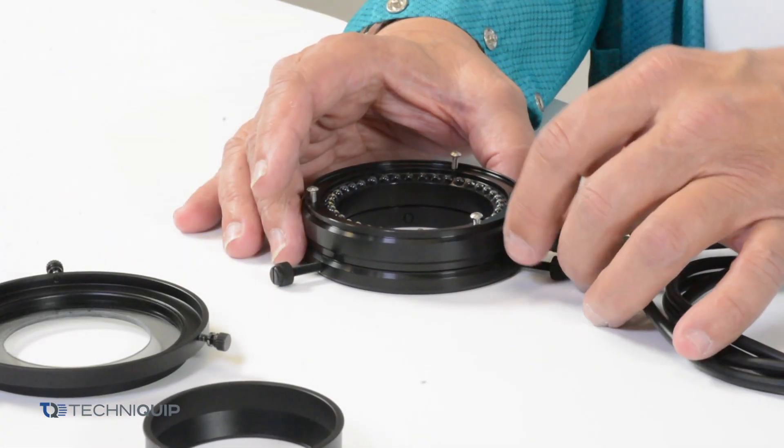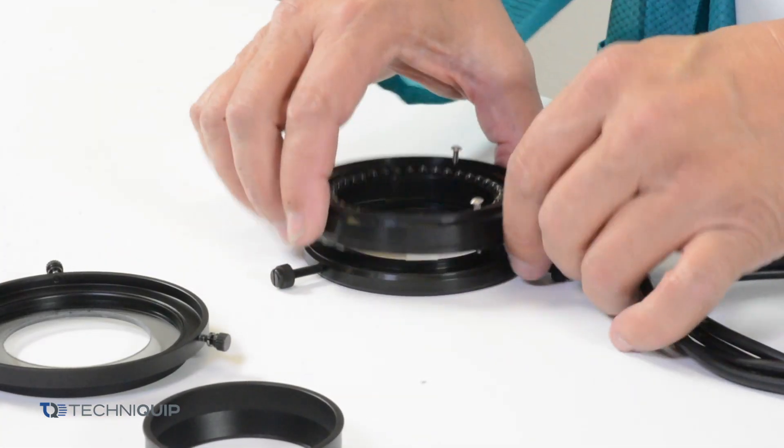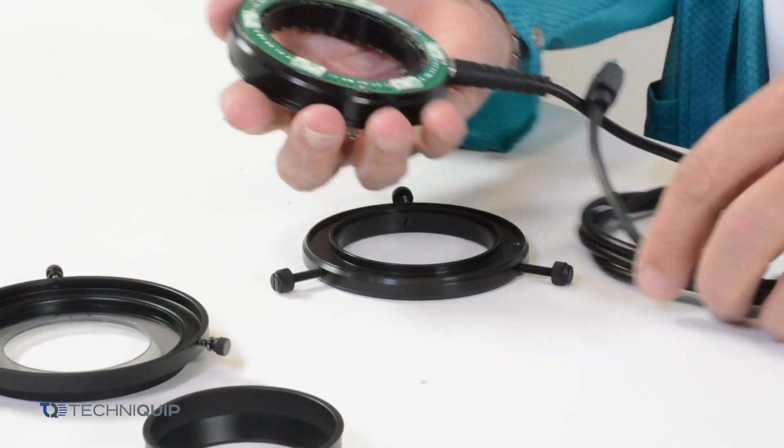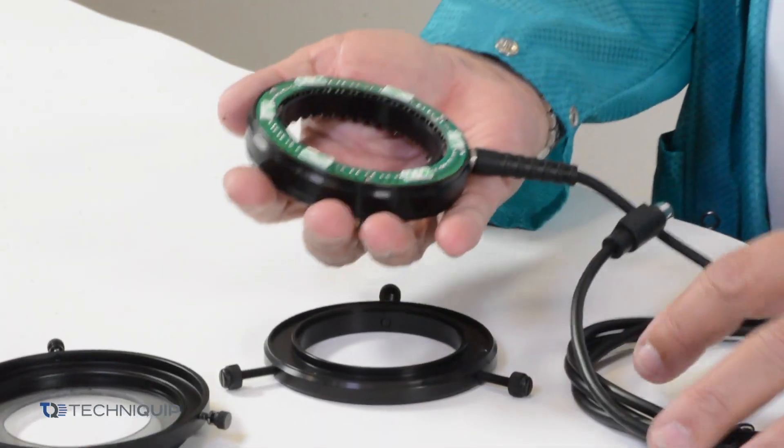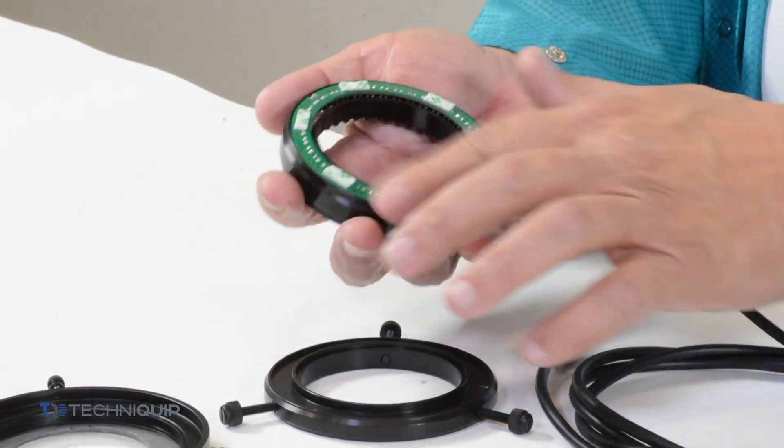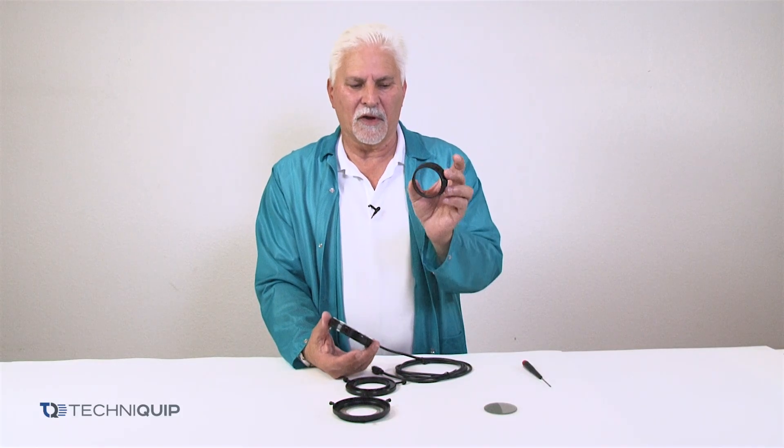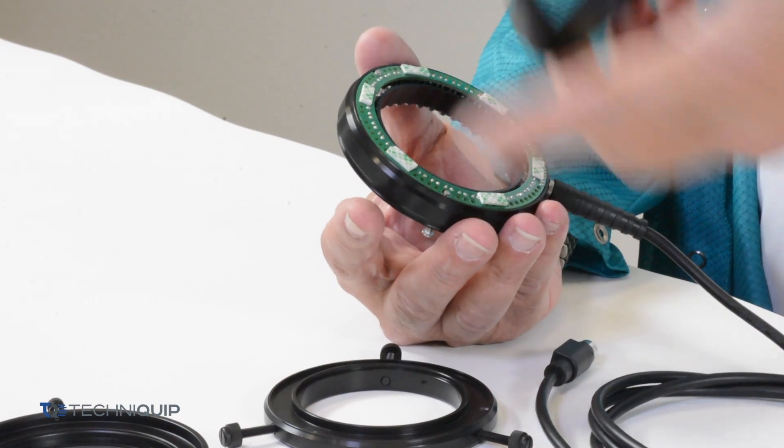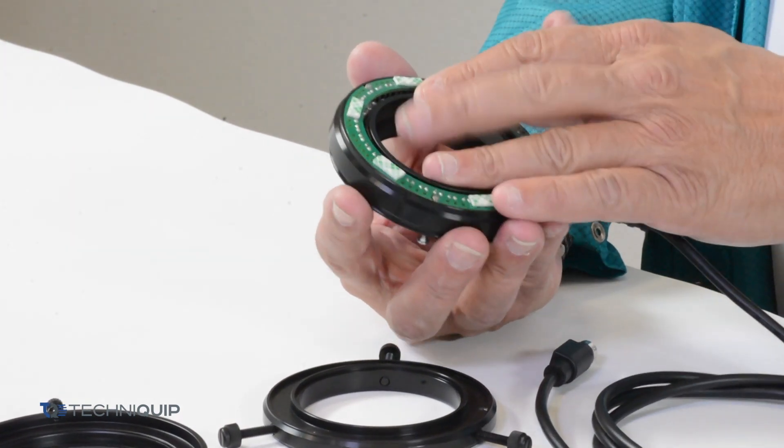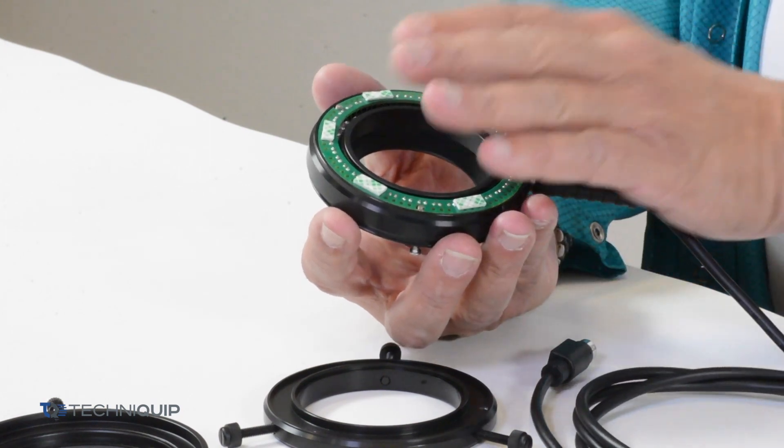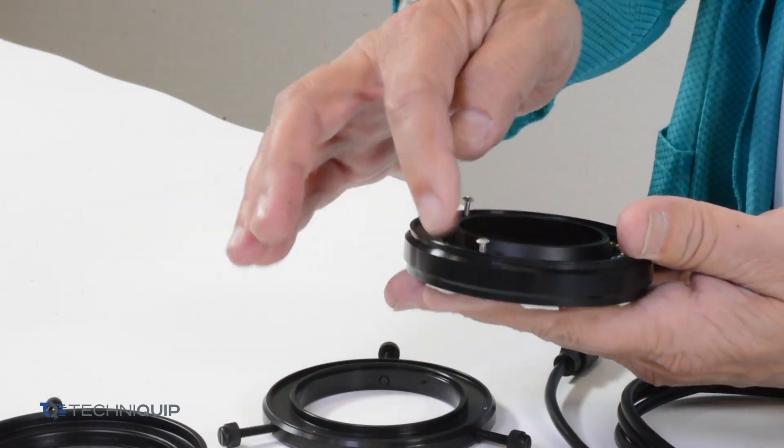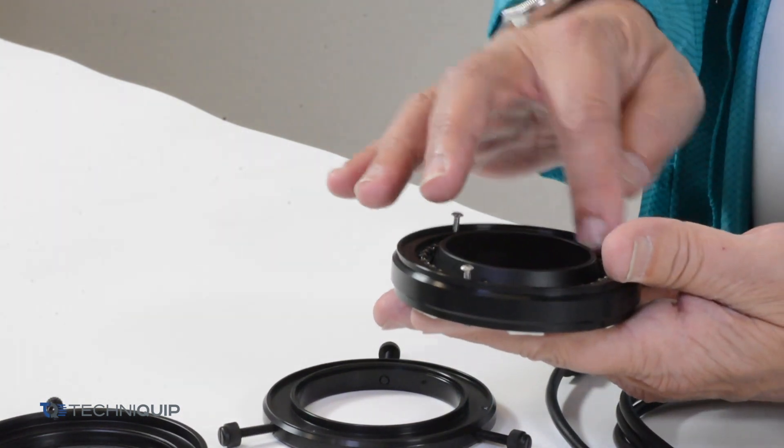The next step after you've loosened all three screws is to turn over the LED main body and you'll notice there's a PC board showing. We're going to insert the cone portion of the polarizer kit into the PC board side. When you're done it'll be coming through towards the LEDs.